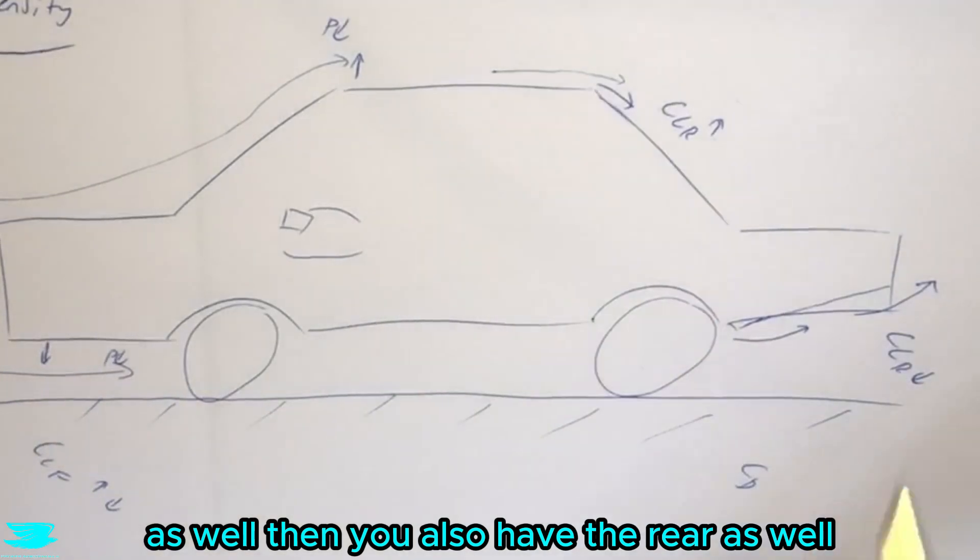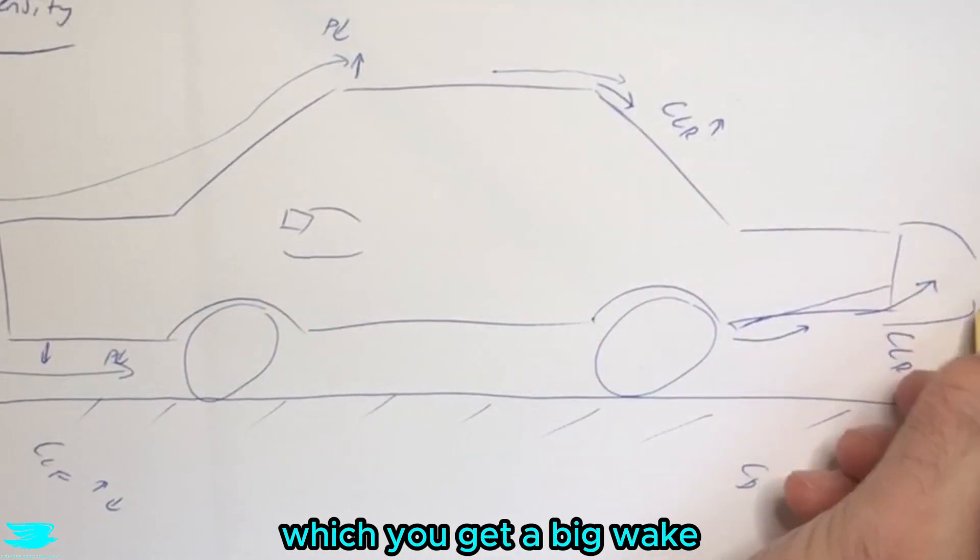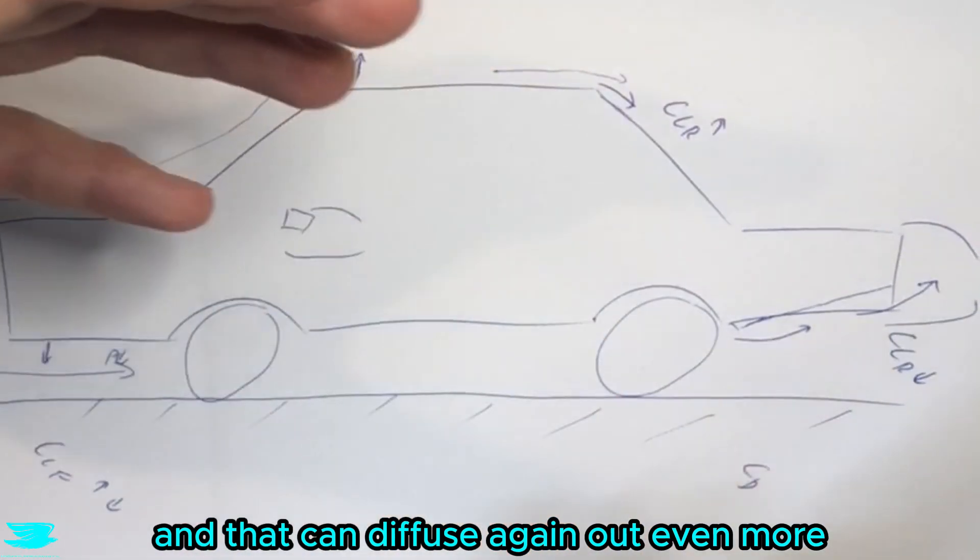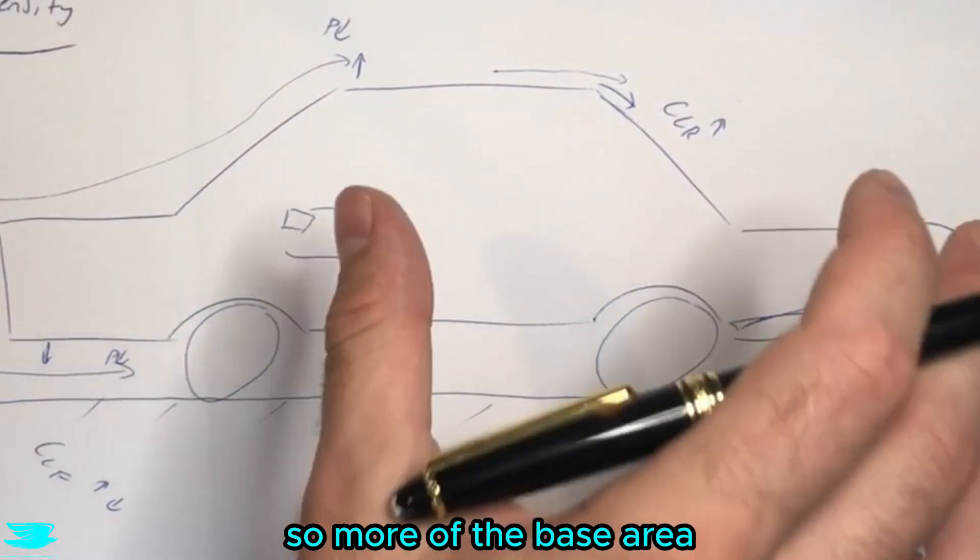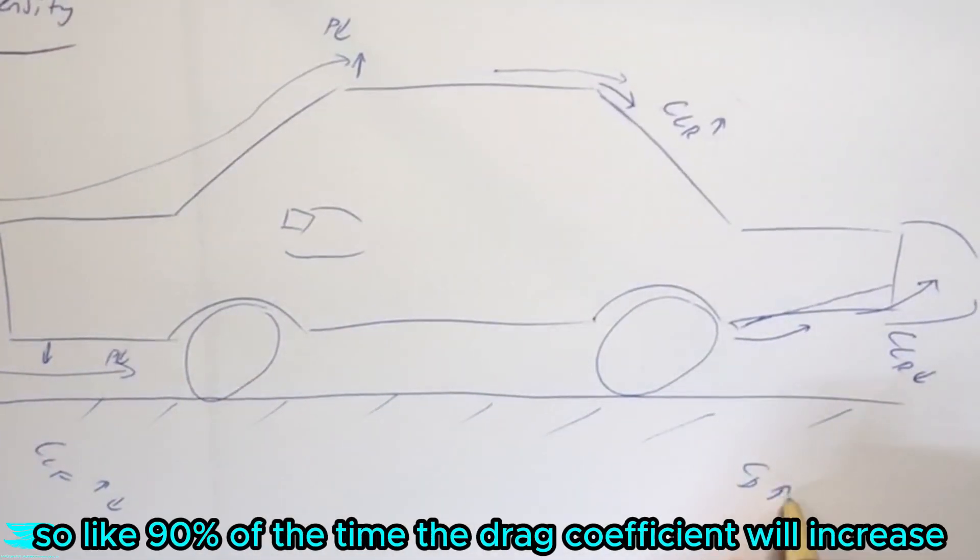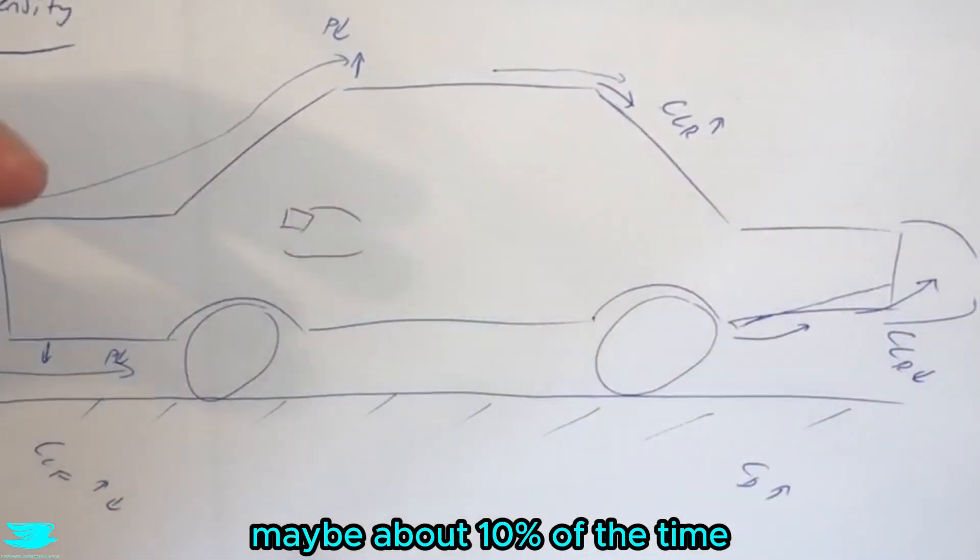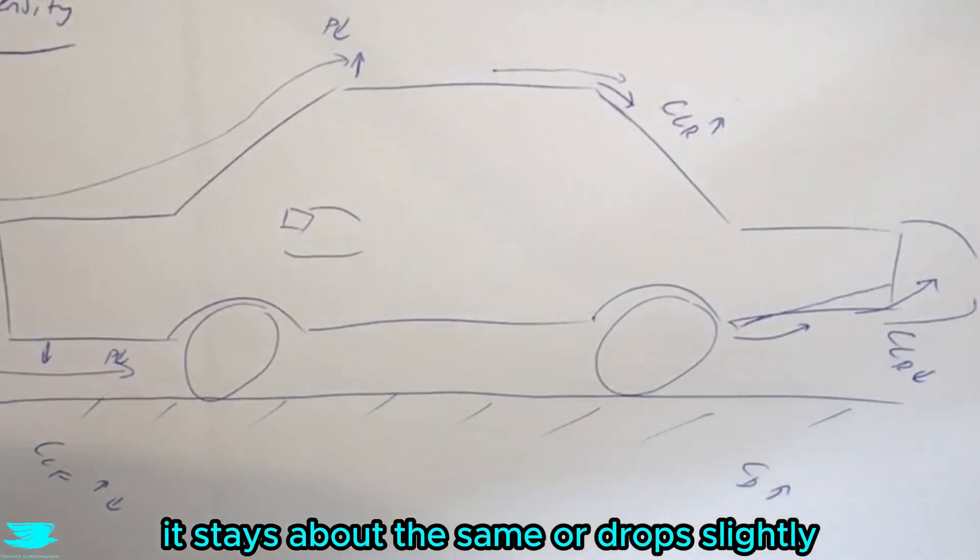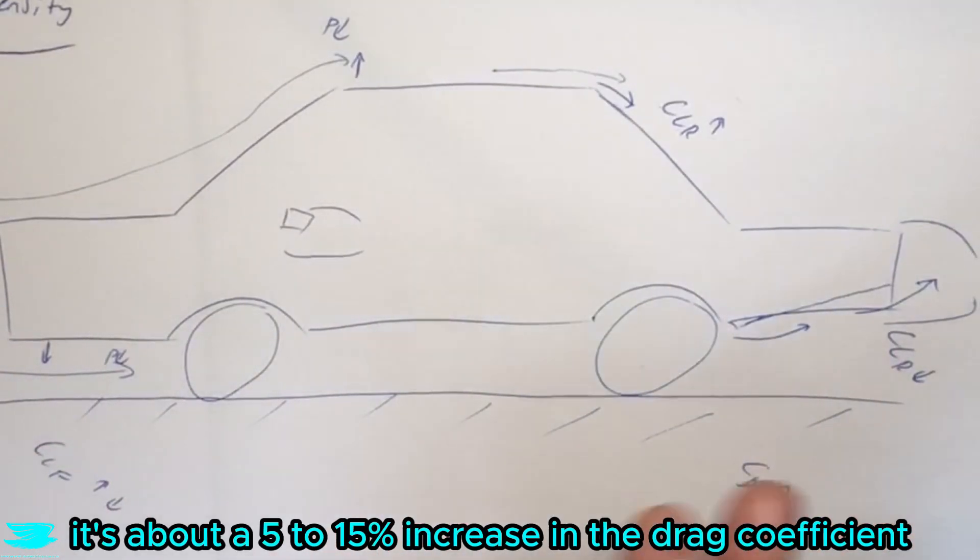Then you also have the rear as well, which you get a big wake, and that can diffuse again out even more. So more of the base area, the back of the car, is seeing a wake. So that also increases the drag. So like 90% of the time, the drag coefficient will increase, maybe about 10% of the time, it stays about the same or drops slightly. But overall, it's about a five to 15% increase in the drag coefficient.